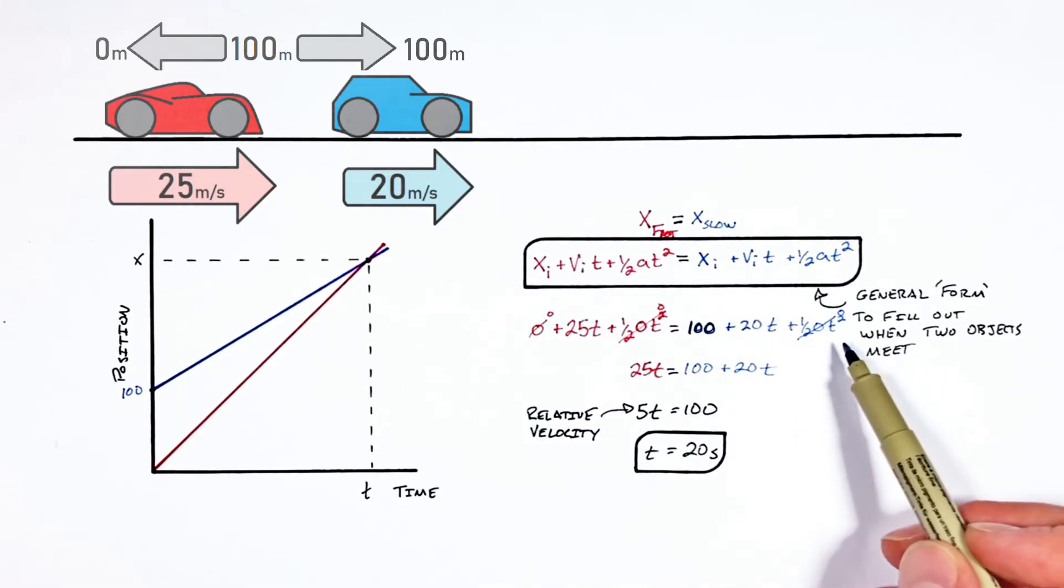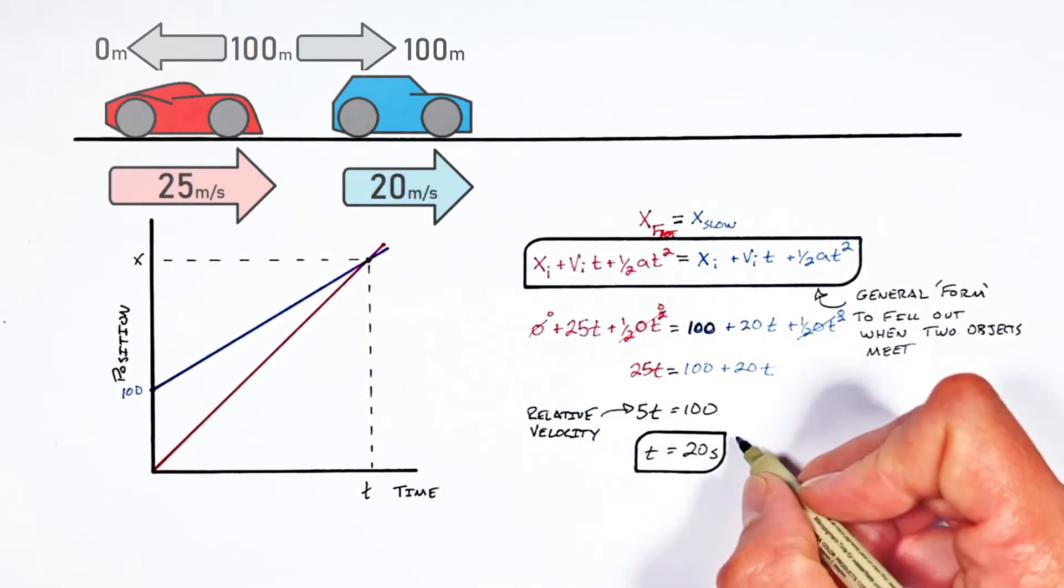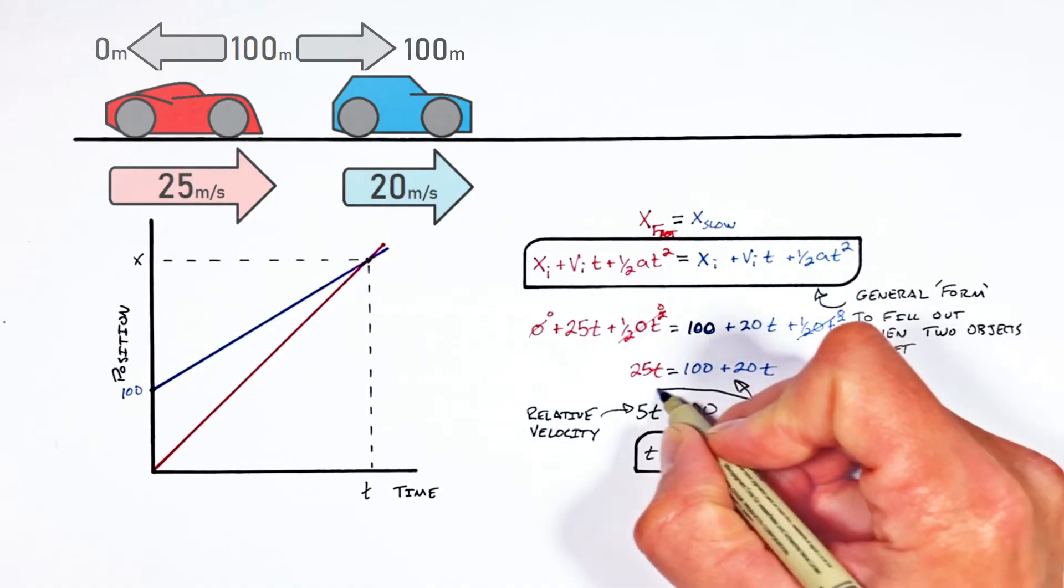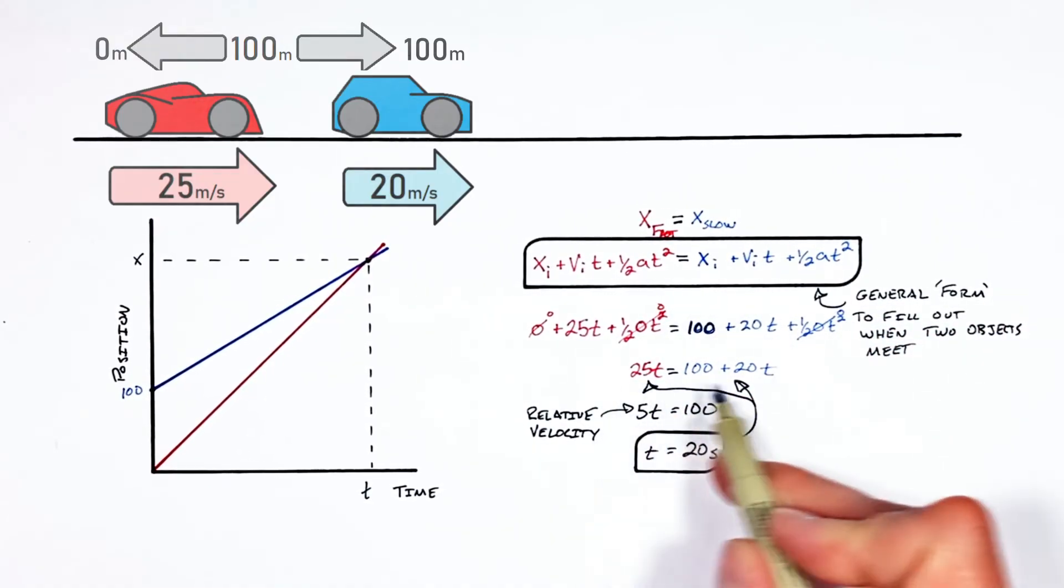You see we have position functions for each vehicle. So when we take this time and substitute it back into really either side of our position function equations, it should spit out where the two vehicles are going to meet.